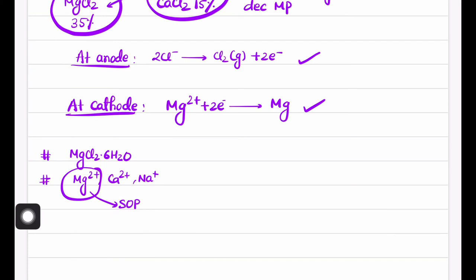So E0 of Mg2+/Mg, this value is lowest, so it is very easy to reduce Mg2+ to Mg. But to reduce Ca2+ to calcium and Na+ to Na is quite difficult.